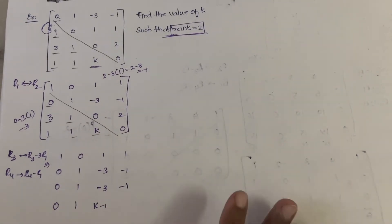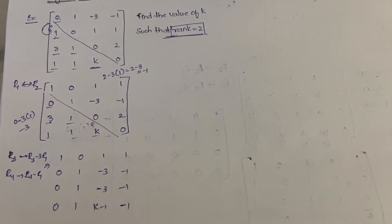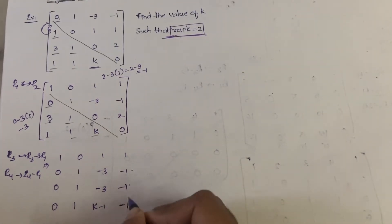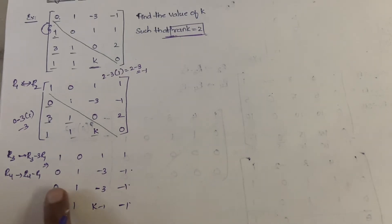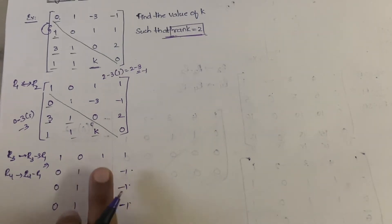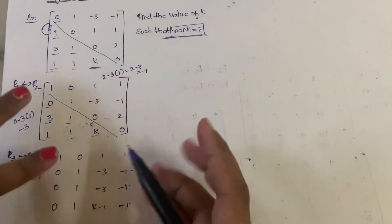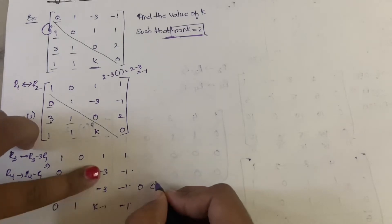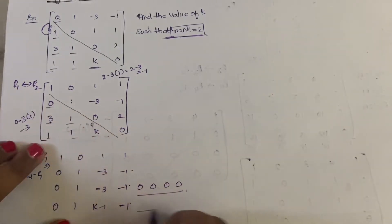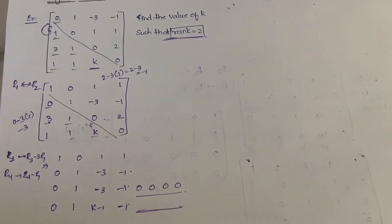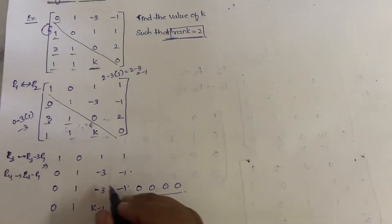Since you don't know the value of k, keep it as k minus 1. Now notice that R2, R3, and R4 are all the same. So apply R3 minus R2: 0-0=0, 1-1=0, -3-(-3)=0, -1-(-1)=0. R3 becomes a zero row. Similarly R4 will also become zero because R2, R3, R4 are all three the same.